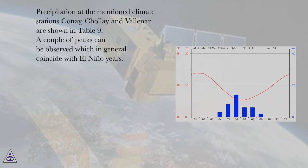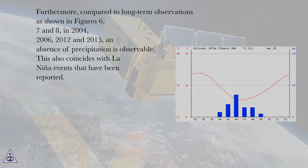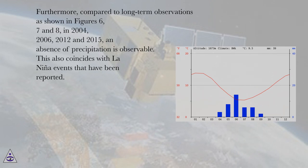Precipitation at the climate stations Cone, Chale, and Vianna are shown in Table 9. A couple of peaks can be observed which in general coincide with El Niño years. Furthermore, compared to long-term observations shown in Figures 6, 7, and 8, in 2004, 2006, 2012, and 2015, an absence of precipitation is observable. This also coincides with La Niña events that have been reported.